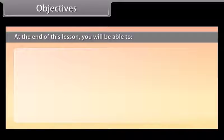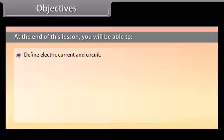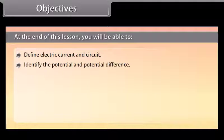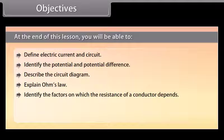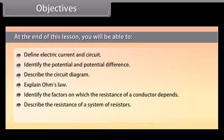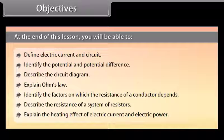At the end of this lesson, you will be able to: define electric current and circuit; identify the electric potential and potential difference; describe the circuit diagram; explain Ohm's Law; identify the factors on which the resistance of a conductor depends; describe the resistance of a system of resistors; and explain the heating effect of electric current and electric power.